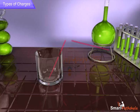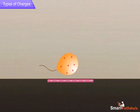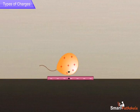Now, rub a straw and place it gently in a glass jar and bring an inflated and charged balloon near the straw. Now, we can observe that the charged balloon is attracted towards the charged straw.